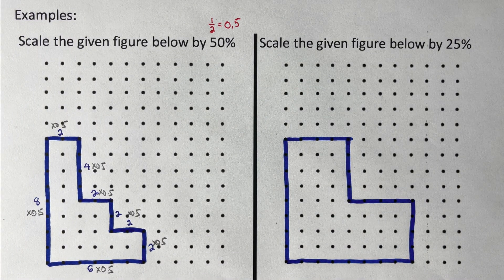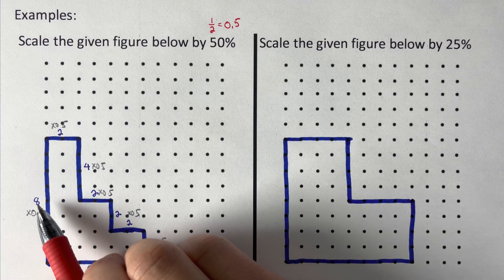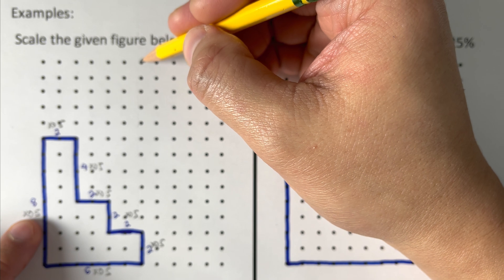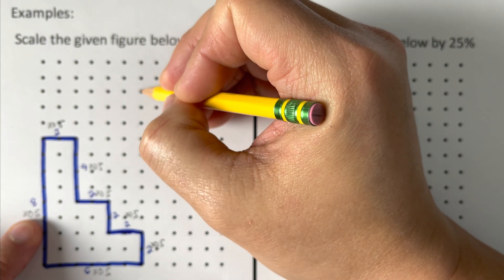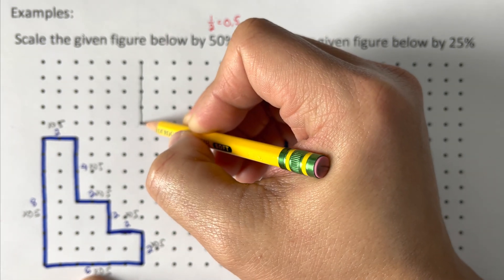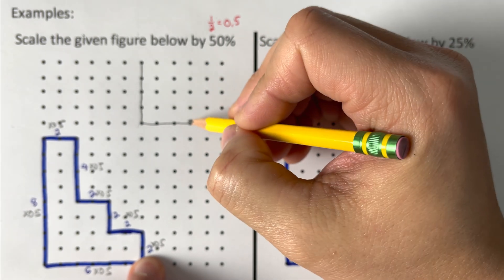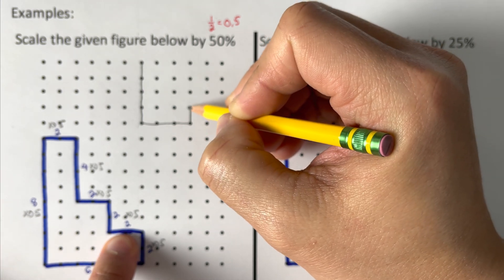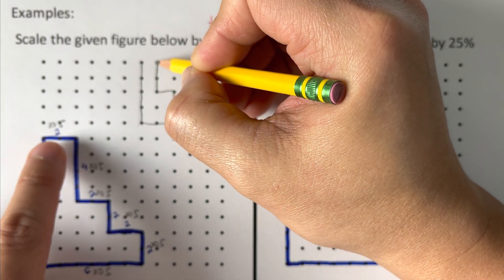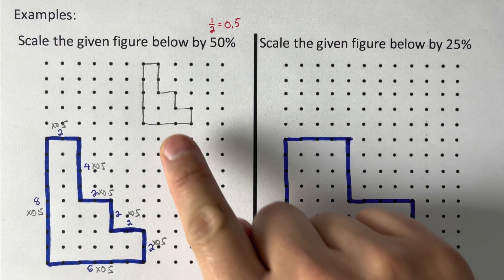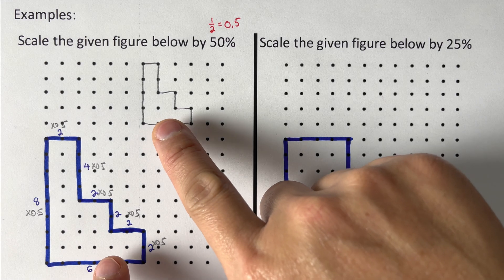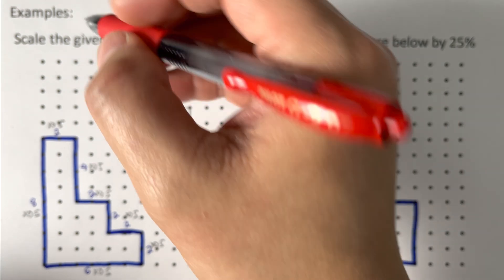After multiplying by 0.5: eight times 0.5 is four, so from here I go down four — one, two, three, four. Then six times 0.5 is three, so I go down three this way. Two times 0.5 is one, so I go up there. Two times 0.5 is another one. Then another one, another one, and four times 0.5 is two, then two times 0.5 is one. This is the new picture, reduced by half or 50%. These two are similar and the scale factor is 0.5.